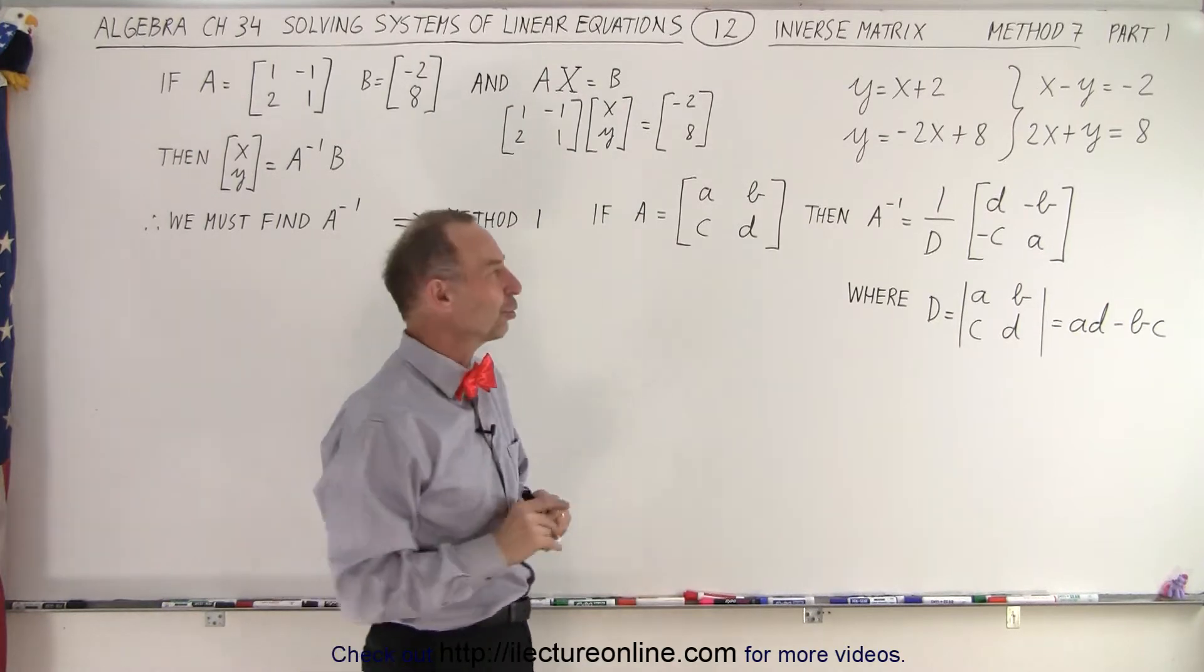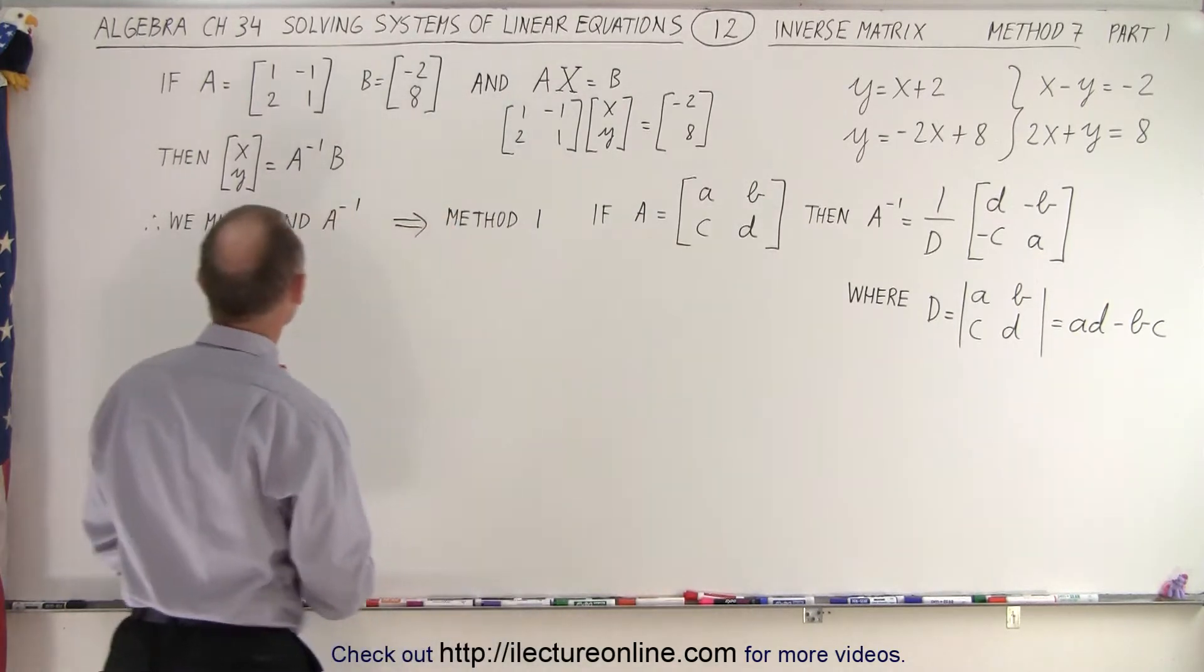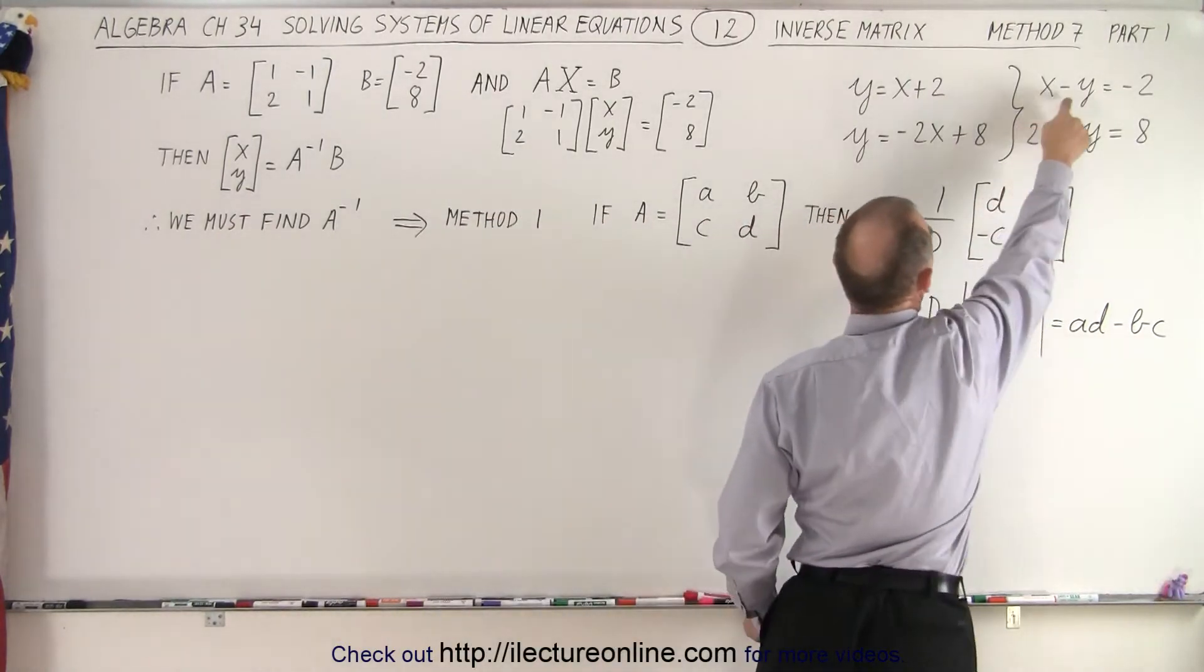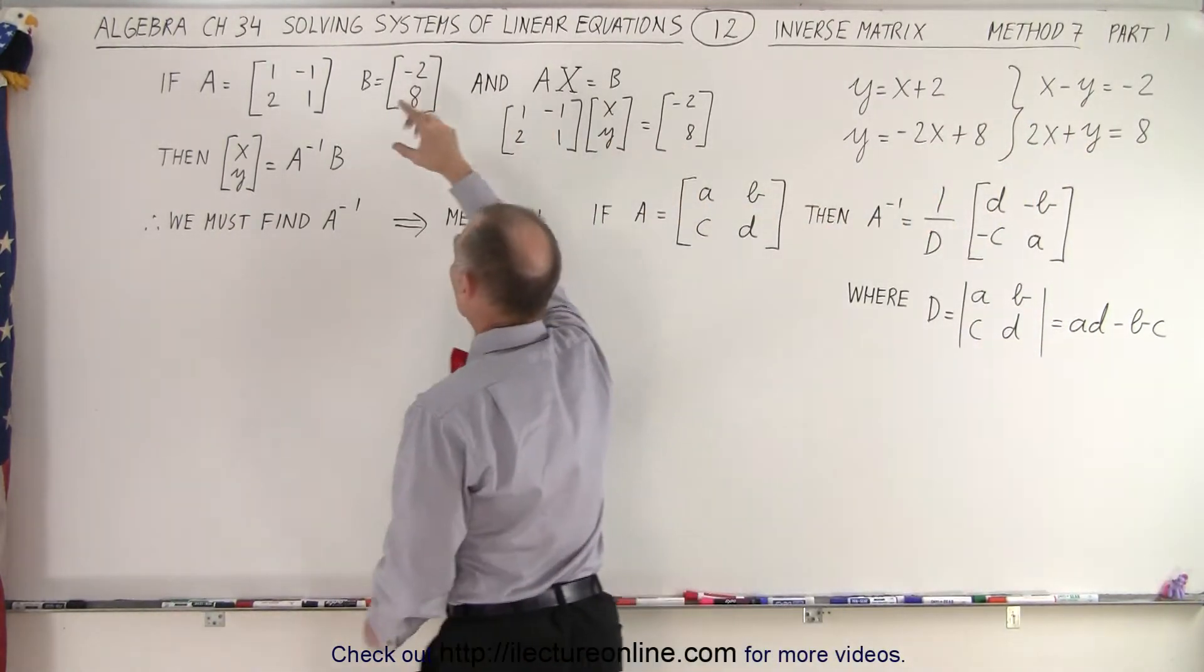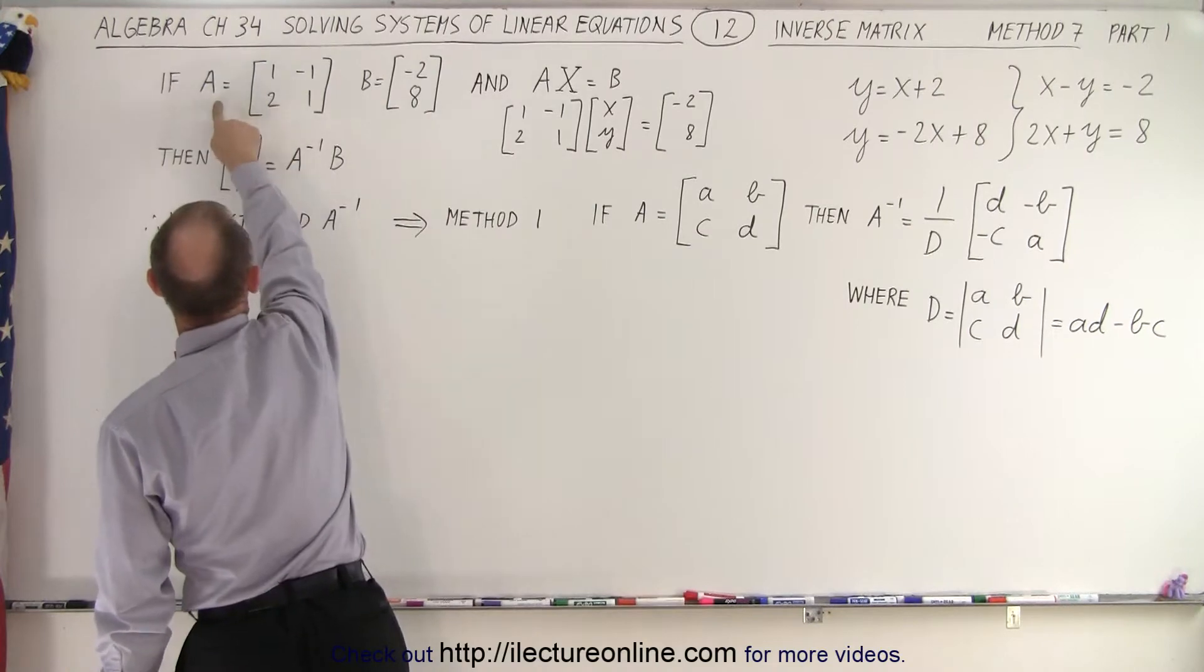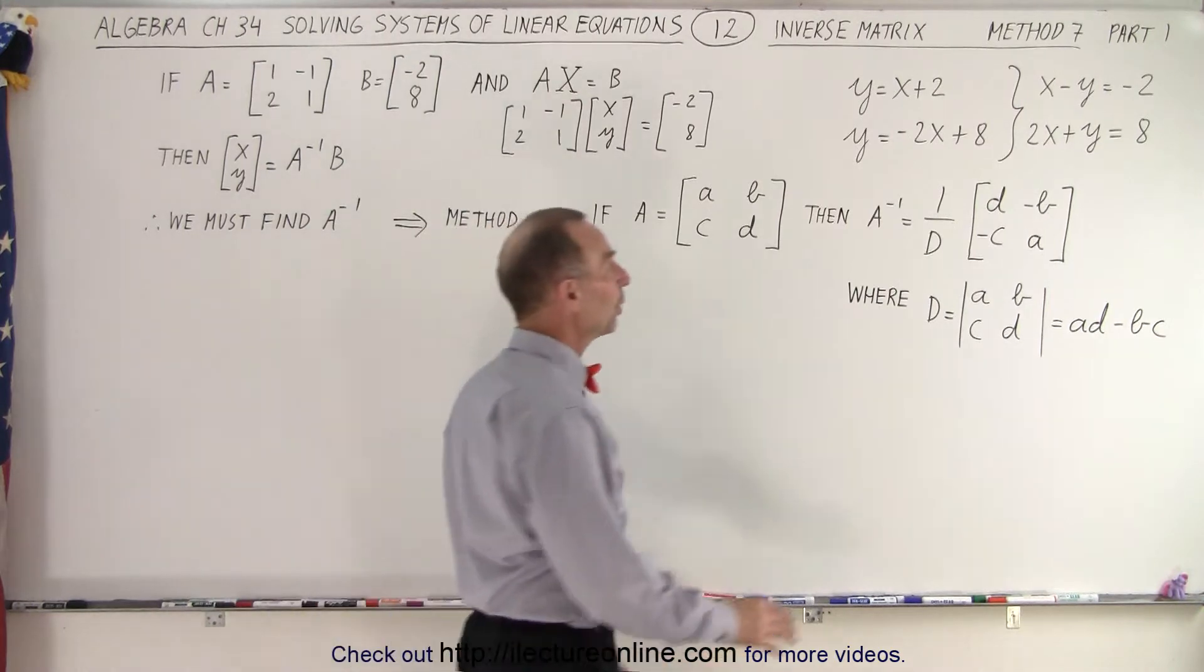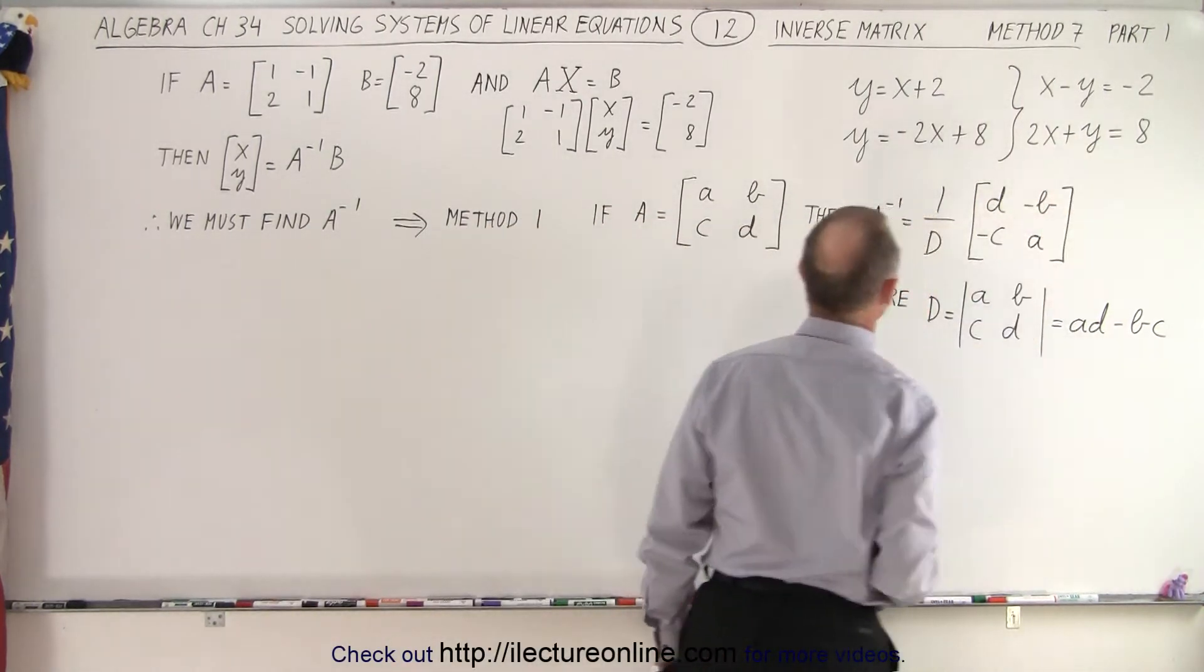Well, we'll get there in just a moment. So first of all, remember that the coefficients of the x and y's can be placed into a single matrix. And let's call that matrix A. A is the numerical coefficients of the x and y variables when they're placed in this format right here.